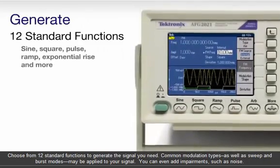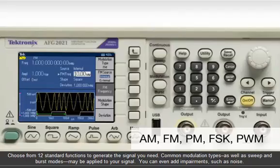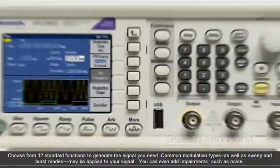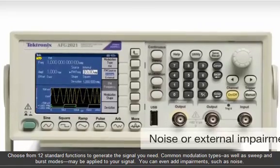Choose from 12 standard functions to generate the signal you need. Common modulation types, as well as sweep and burst modes, may be applied to your signal. You can even add impairments, such as noise.